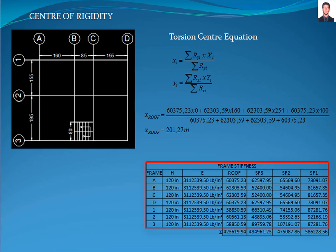And the result, we divide it by the summation of the stiffness, giving a result of 201.27 inches.